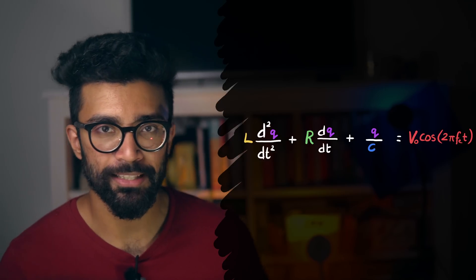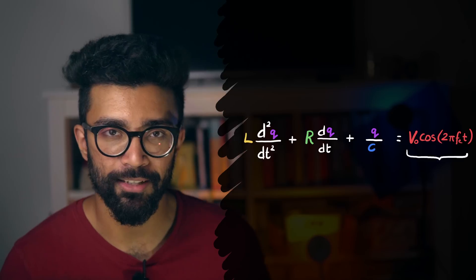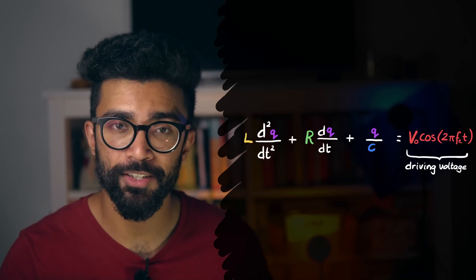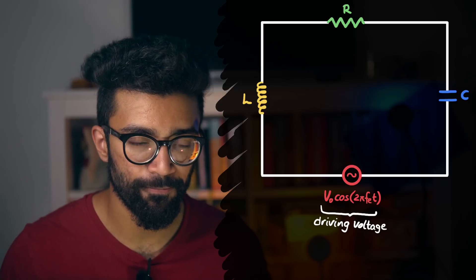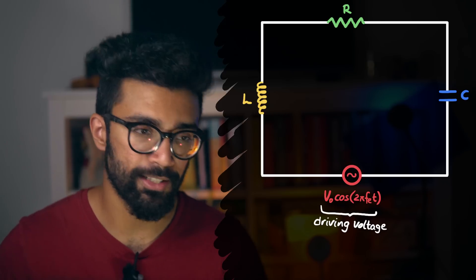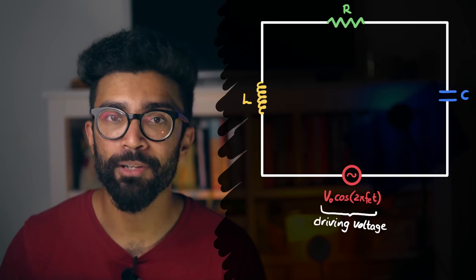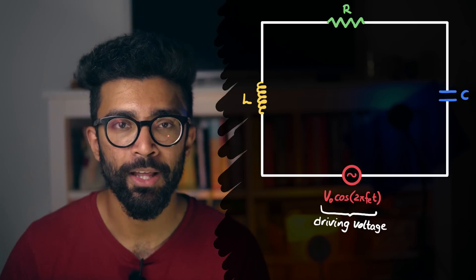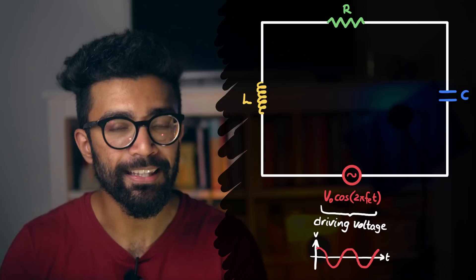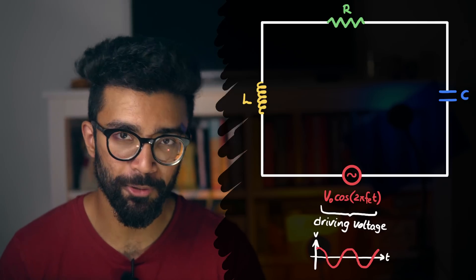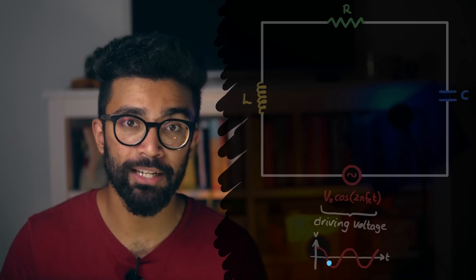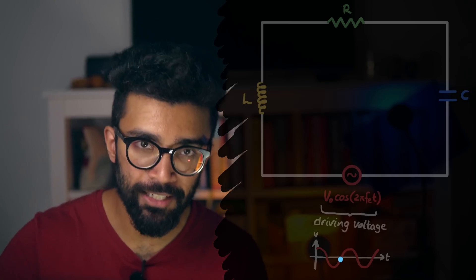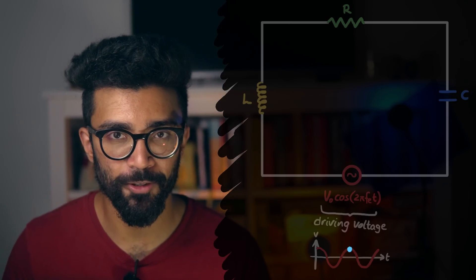The simplest one in this case is this term on the right hand side. It's the driving voltage, which is the voltage supplied to the circuit by our power supply. These can supply various different kinds of voltage. But the simplest alternating voltage, at least theoretically, is a sinusoidal one. In this case, a cosine function. So the voltage starts at its max value, then decreases, reaches its maximum negative value, and then increases again, and so on and so forth.